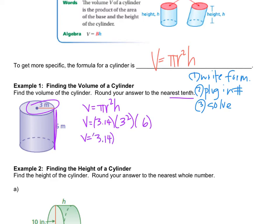So order of operations says you do exponents first. And now you grab your calculator and punch the buttons: 3.14 times 9 times 6. V equals 169.56, but it says to round to the nearest tenth, so that is 169.6. And the label for volume is cubed because it's three dimensional, so it's going to be meters to the third, or you could write 169.6 cubic meters.